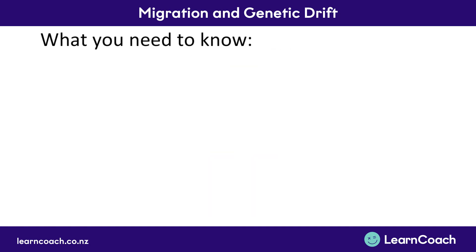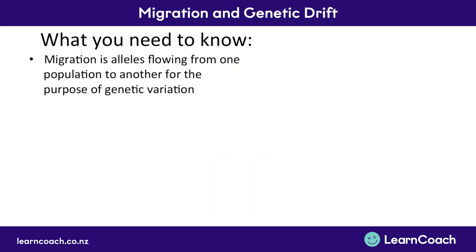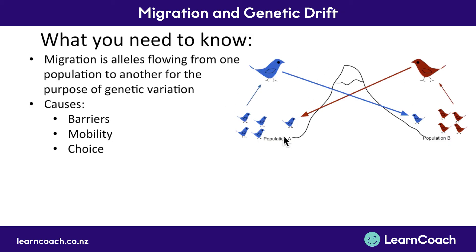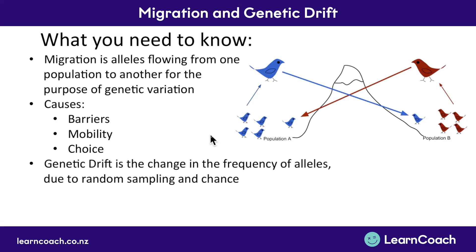Here's what you need to know. Migration is alleles flowing from one population to another, and the purpose is genetic variation. That can be caused and stopped by barriers — often physical barriers get in the way — by mobility, so more mobile things will be more dispersed and there'll be more migration (people are very mobile; we immigrate and migrate all the time), and by choice, as people and animals want to go to other places and choose other mates.